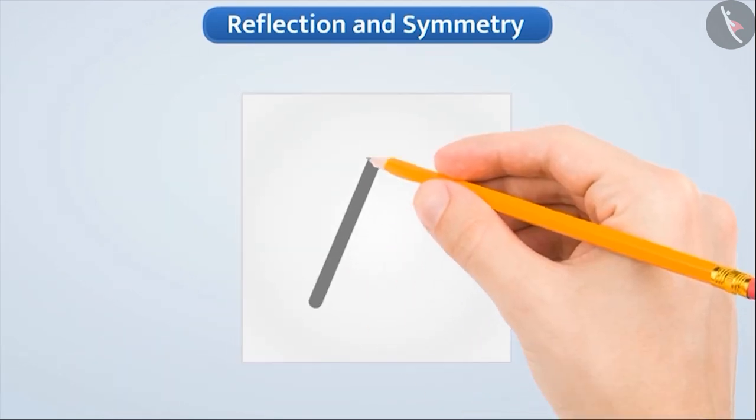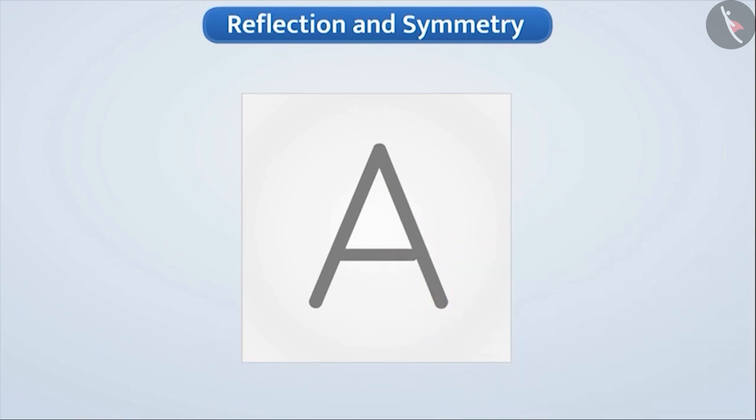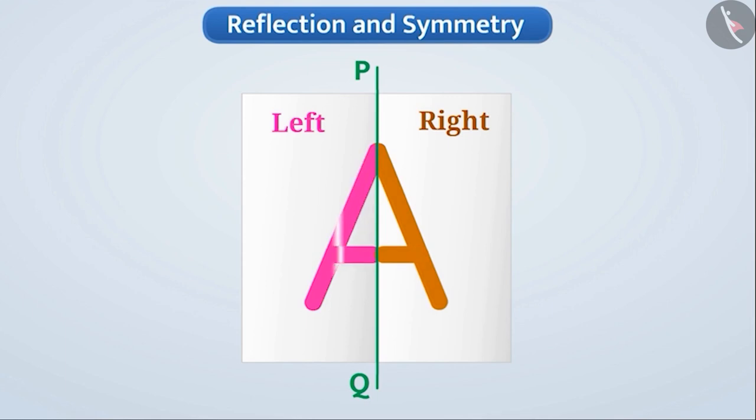Suppose we draw letter A on a piece of paper. If we fold this paper from the middle in this way, we will get two equal parts of A. The left part and the right part. Let us give the name PQ to the line formed by folding the paper. If we look here, the left half of A and the right half of A are exactly identical to each other.